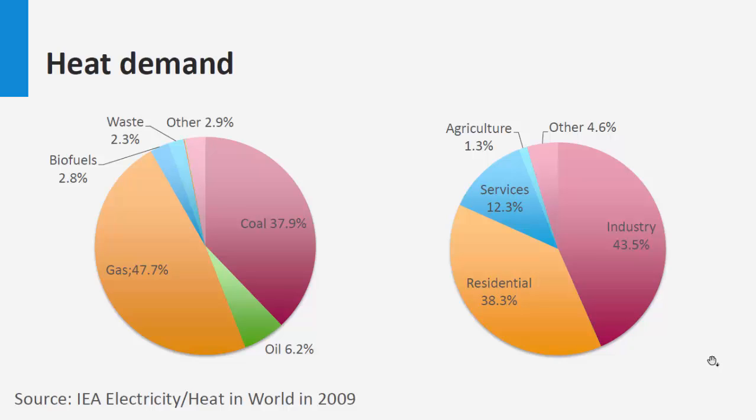Oil, coal, and gas account for more than two-thirds of this demand. Most of the heat demand is accounted for by industrial and residential sectors. What we propose here is to cover at least part of the heat demand with solar energy.